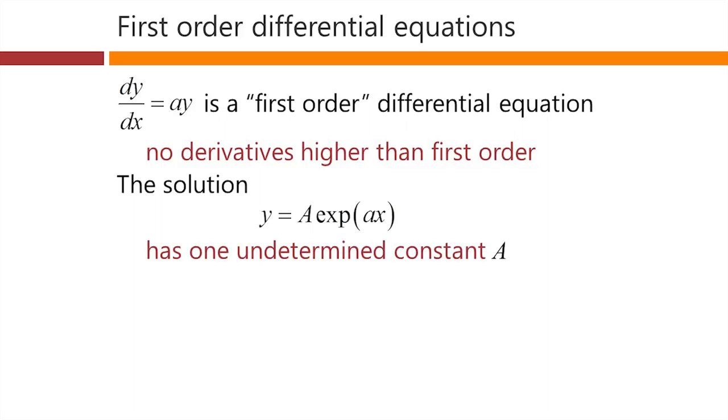The solution here, y equals capital A times the exponential of small a times x, has one what we call an undetermined constant A. The solution will work for any value of the constant A. That's a characteristic of a first-order differential equation, that the solution has one undetermined constant.